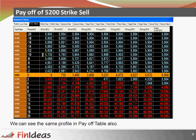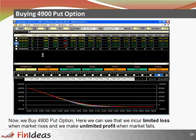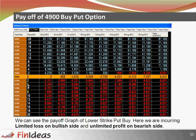Third trade: buying the 4900 put option. Here we can see that we incur limited loss when market rises and when market falls we are having unlimited profit. In the graph, when the market is above 4900 we are having limited loss up to the premium, and when market is falling below 4900 we are having unlimited profit. The payoff table for the 4900 put confirms limited loss on the bullish side and unlimited profit on the bearish side.